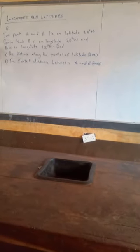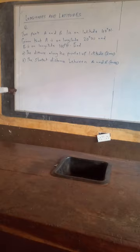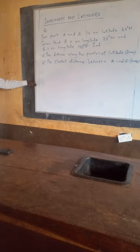Introduction to longitude and latitude. The question states that two points A and B lie on latitude 40 degrees north. A is on longitude 20 degrees west and B is on longitude 100 degrees east. We need to find: (a) the distance along the parallel of latitude, and (b) the shortest distance between A and B.